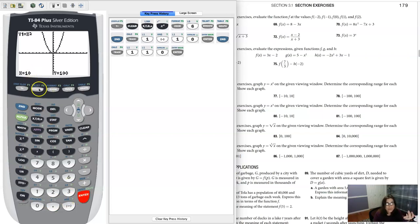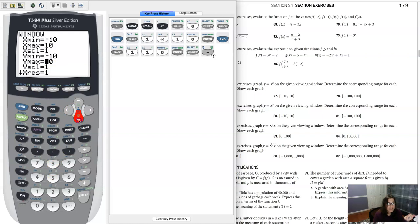Well if I go back to my window, you can see that my y max is only 10, so I'm not seeing all of it. So let me go ahead and put this at a hundred, and then I'm gonna hit graph.